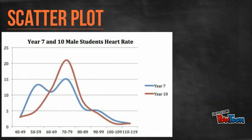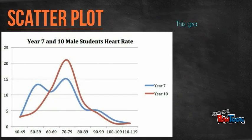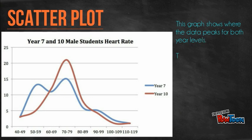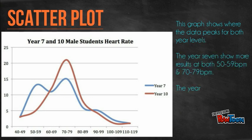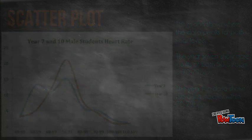The scatter plot shows the trend lines in both sets of data. We can see the Year 7s' data peaks twice at 50 to 59 and 70 to 79 beats per minute, while the Year 10s have one high peak at 70 to 79 beats per minute.